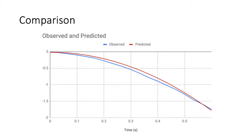Our observed tracker data is graphed in blue and our predicted data is graphed in red. Upon examination, the two graphs mirrored each other very closely. Despite a few discrepancies in the positions of the two graphs, the two are very similar.